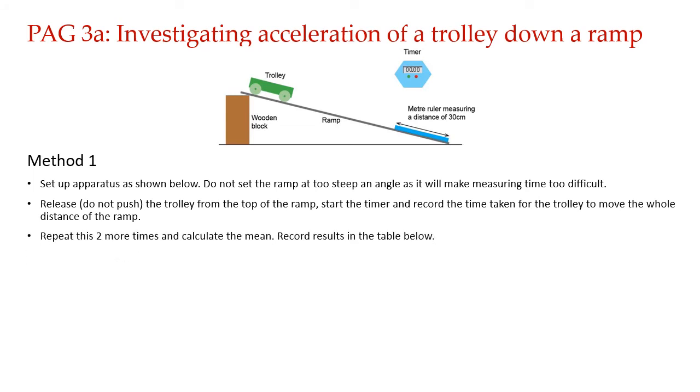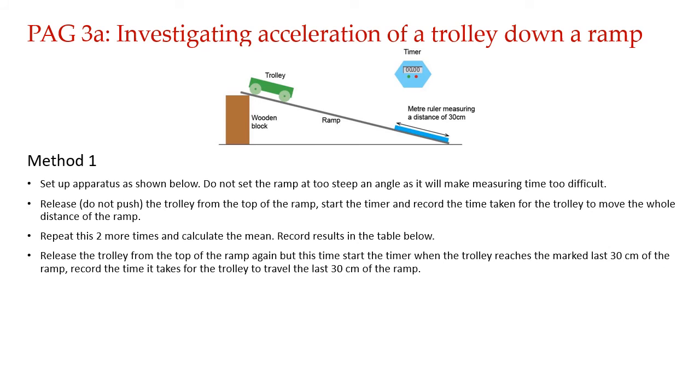Then what we do is we release the trolley again from the top of the ramp. But this time we don't start the stopwatch as soon as you release the trolley. You wait for the trolley to reach the distance that we have marked. You can see that we have marked a 30 centimeter distance at the bottom of the ramp. So we wait till the trolley enters the marked distance. As soon as trolley enters that distance, we start the timer and we record the time it takes to travel the last 30 centimeters of the ramp. For both measurements, both have to be repeated at least two times. It's good to repeat it three times and then find an average.